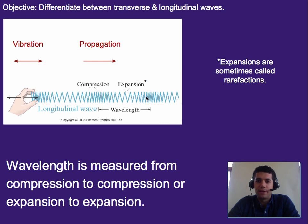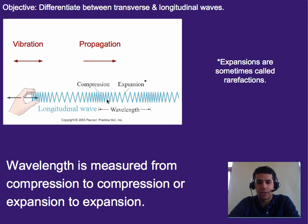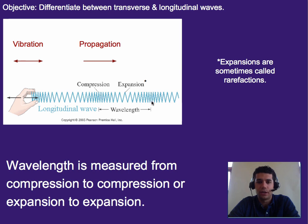In this type of wave, expansions are sometimes called rarefactions and compressions are almost always called compressions. Wavelength is going to be measured from compression to compression, or rarefaction to rarefaction. The expansion-to-expansion distance is where the material is spread out, and compression-to-compression is from the most compressed or squeezed point all the way to the next most squished version.